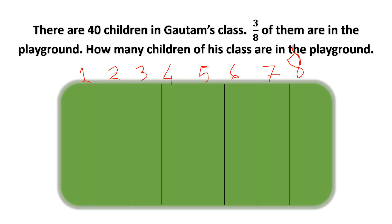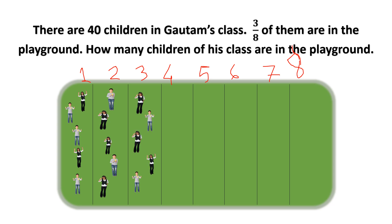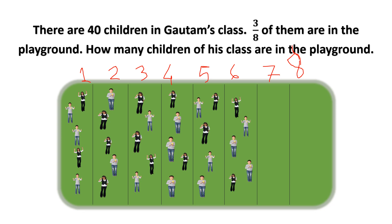If there are 40 children and I divide the playground into 8 sections, how many children will be there in each section? 40 divided by 8 is 5. So let me put the children in groups. In the first column we have 5 children, then 10, 15 — in each column we are having 5 children — 20, 25, 30, 35, 40. So all 40 children are now in the playground.